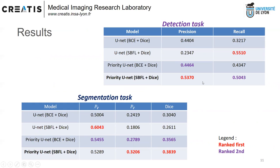Regarding the ablation study, comparison of lines 1 and 3 shows the benefits of the proposed attention map, allowing a gain in recall while keeping constant precision. Comparing lines 1 and 2 shows the influence of SBFL, which gives a significant gain in recall but at the price of a drop in precision. In our full model, the attention map allows control of the precision drop induced by SBFL while preserving recall.